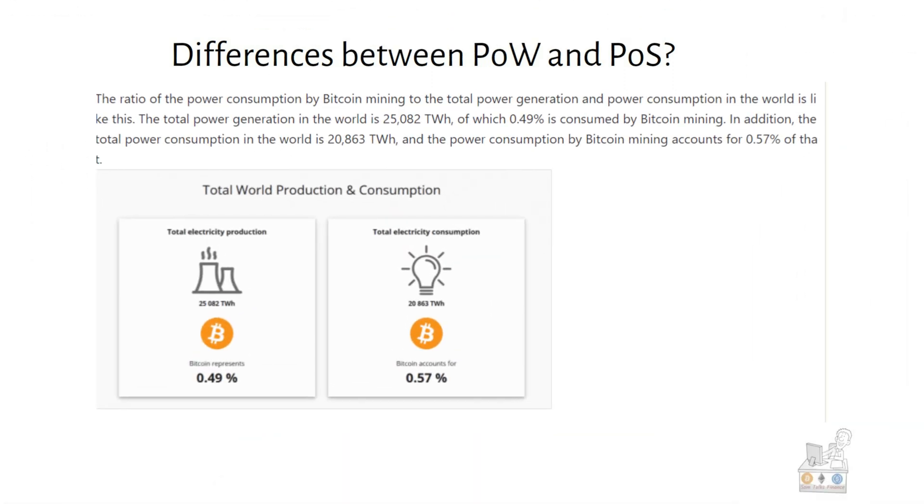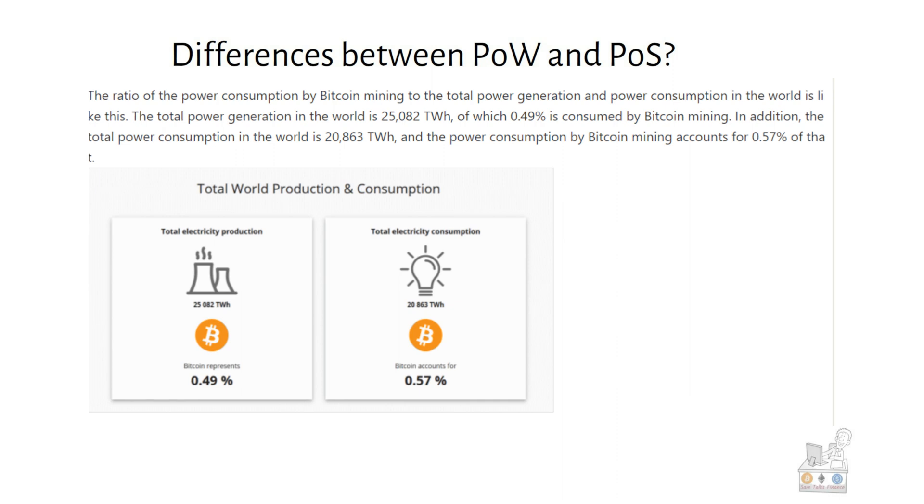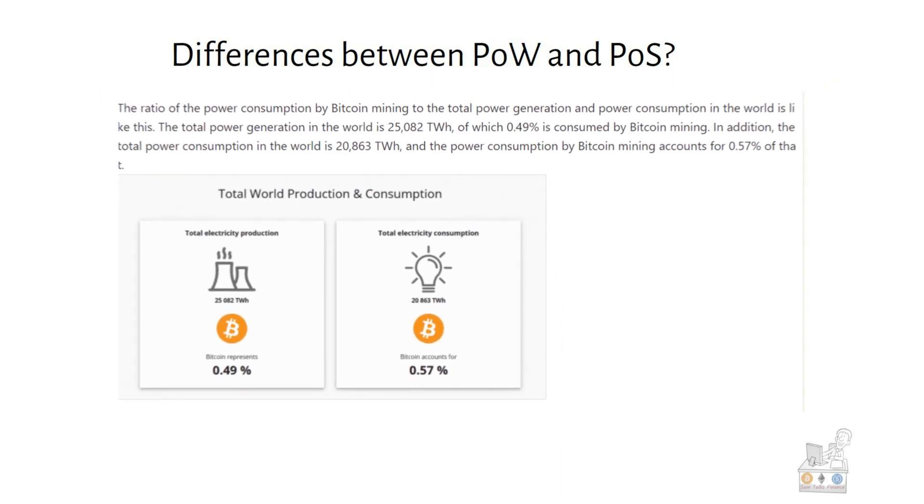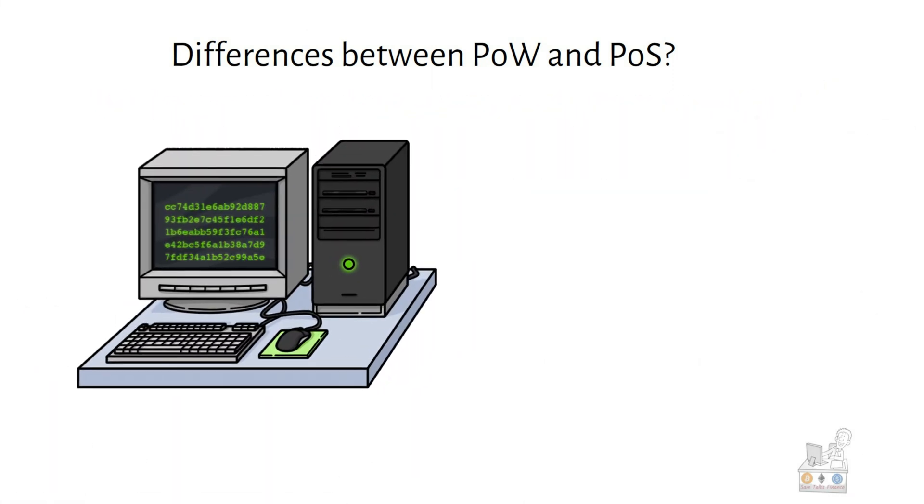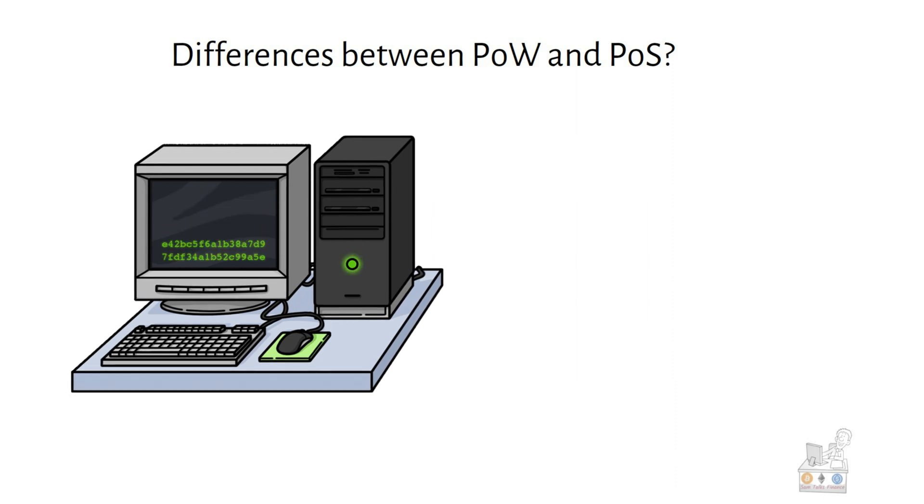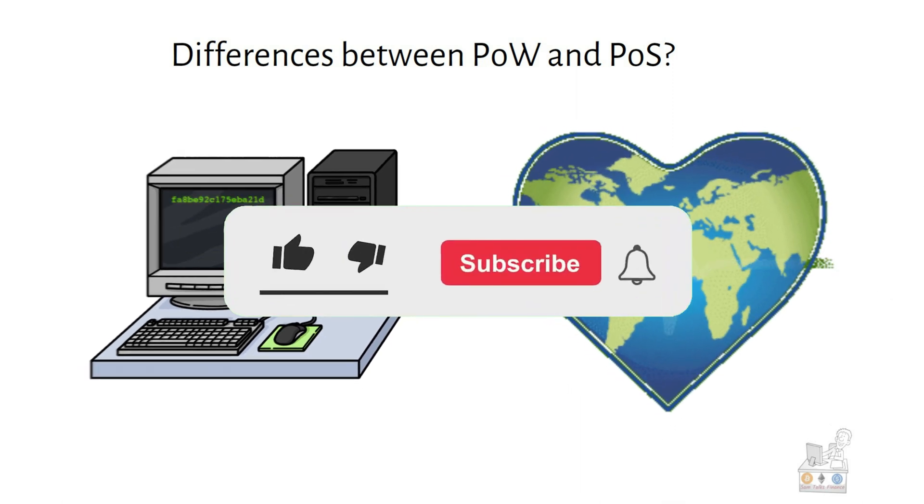For example, Bitcoin miners worldwide use 0.39% of the world's power, according to University of Cambridge estimates. Proof-of-stake networks have much lower energy consumption, so they're very good for the environment.